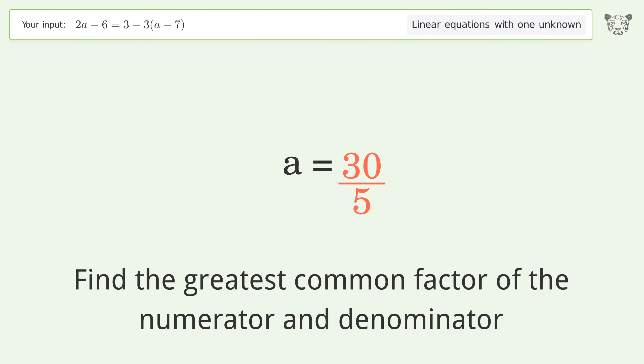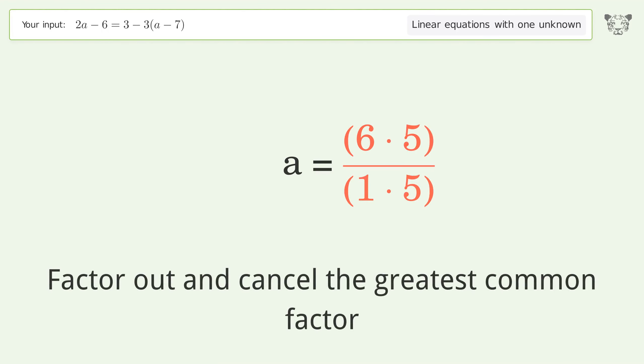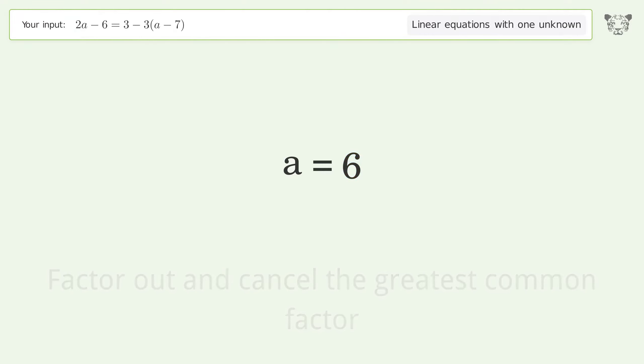Find the greatest common factor of the numerator and denominator. Factor out and cancel the greatest common factor. And so the final result is a equals 6.